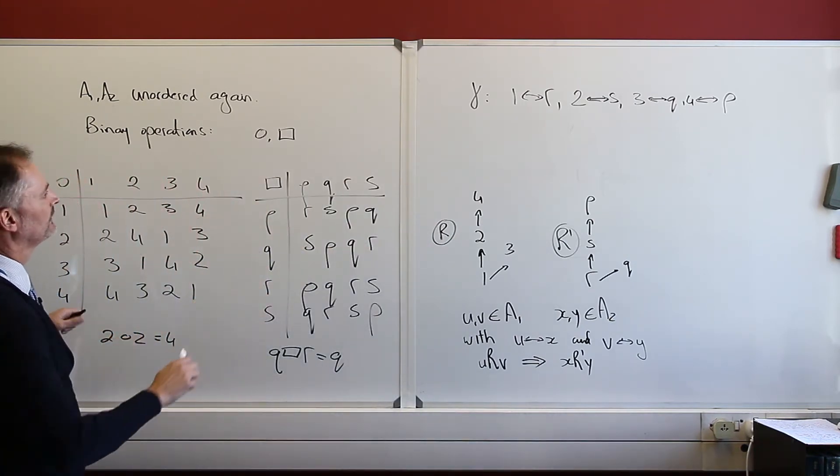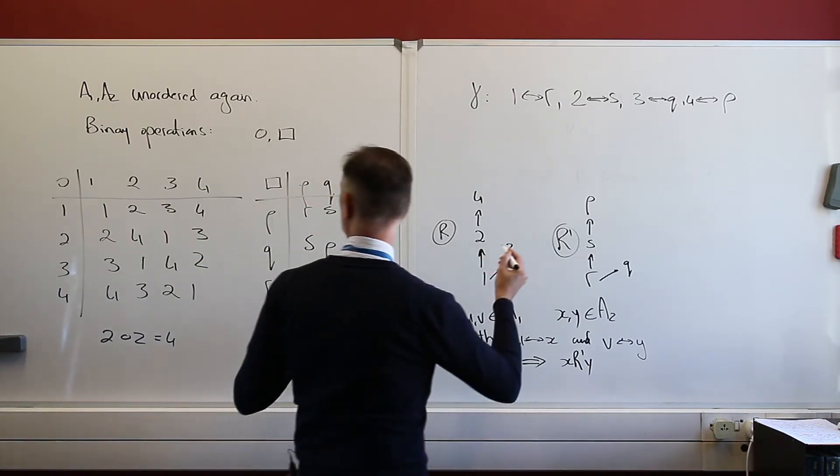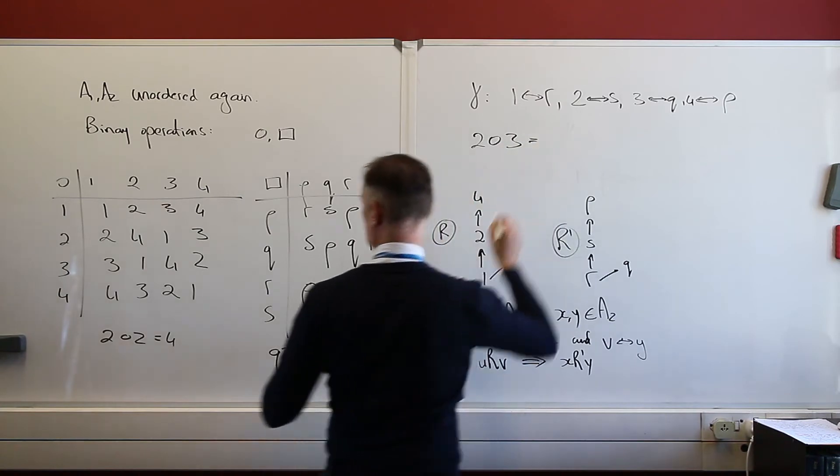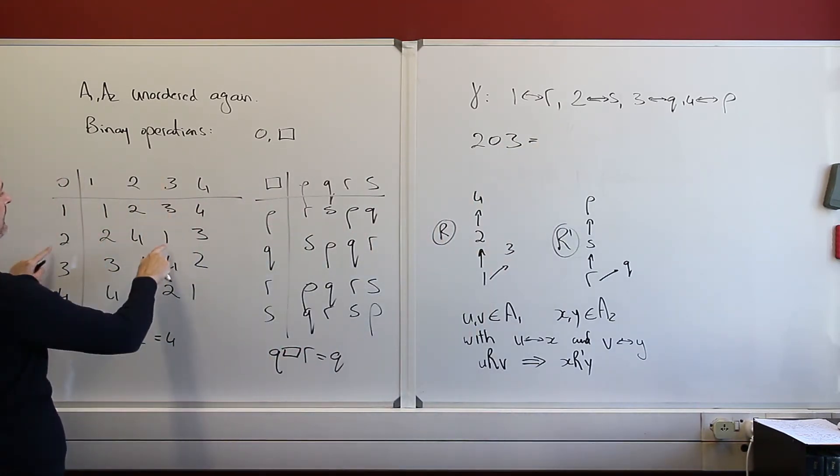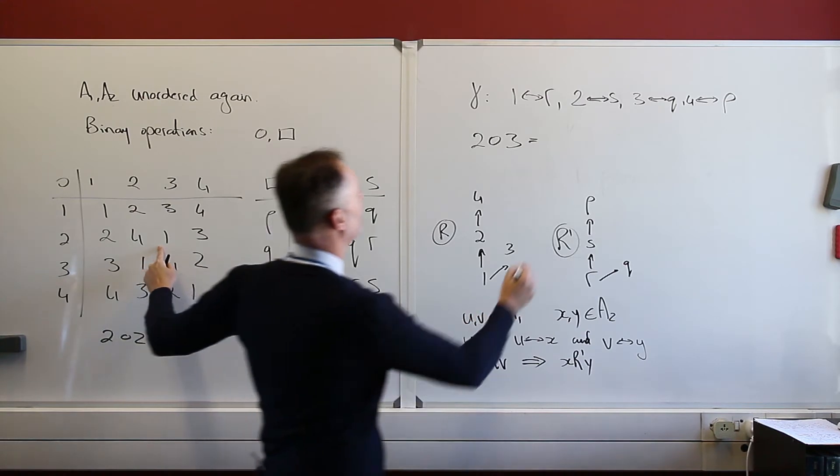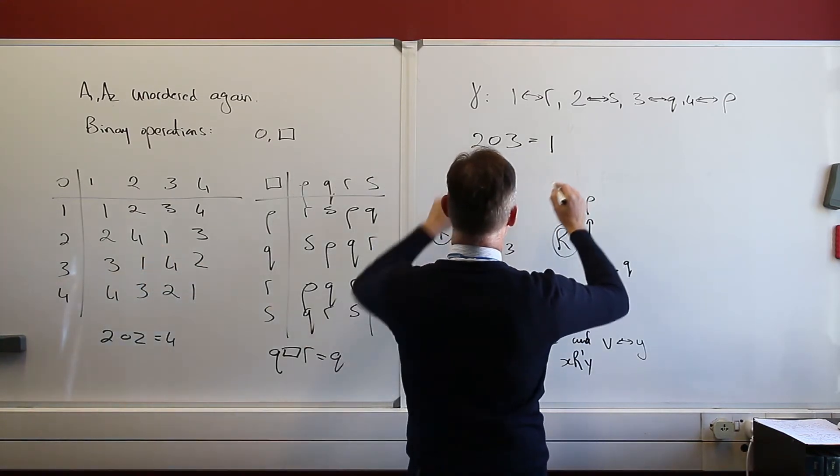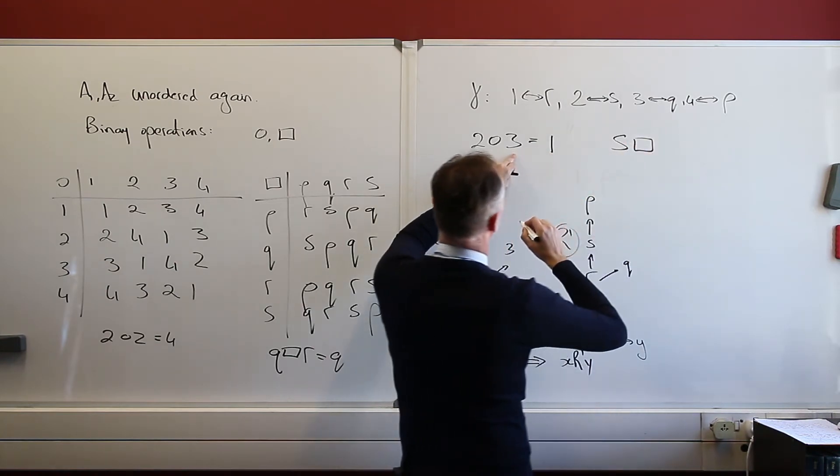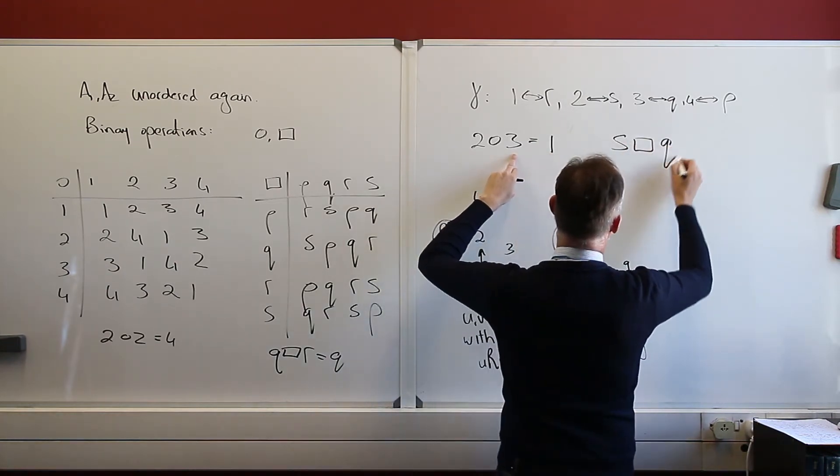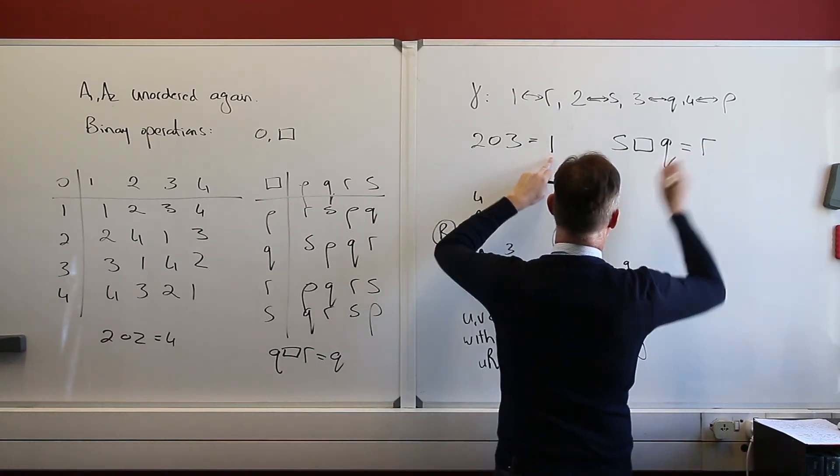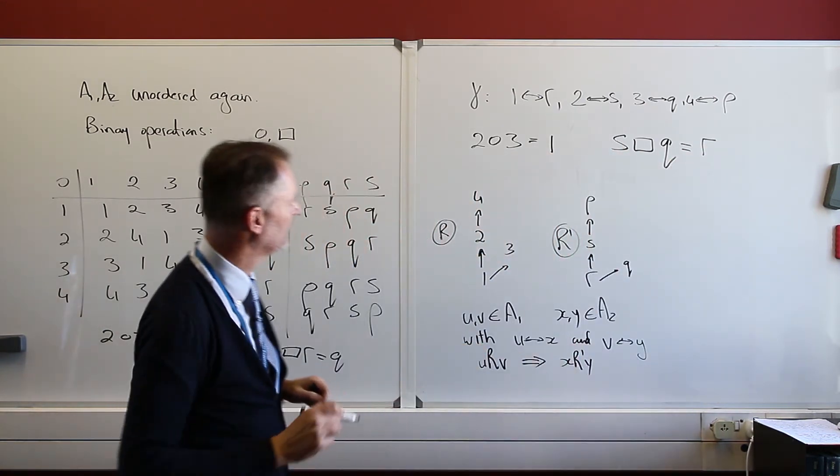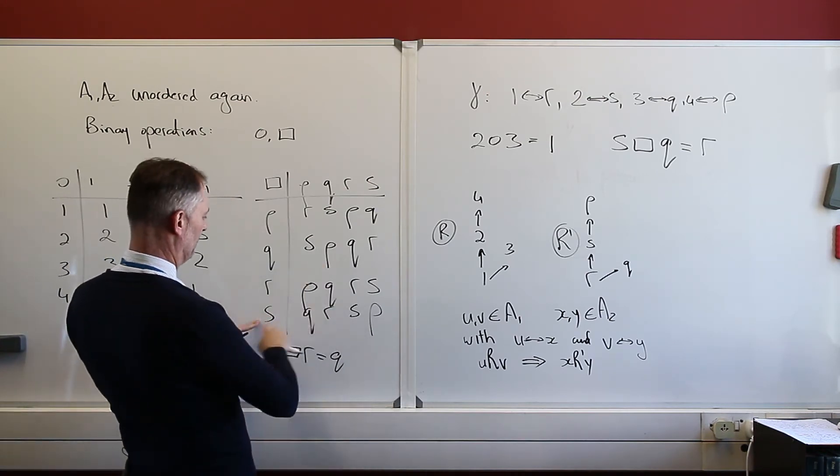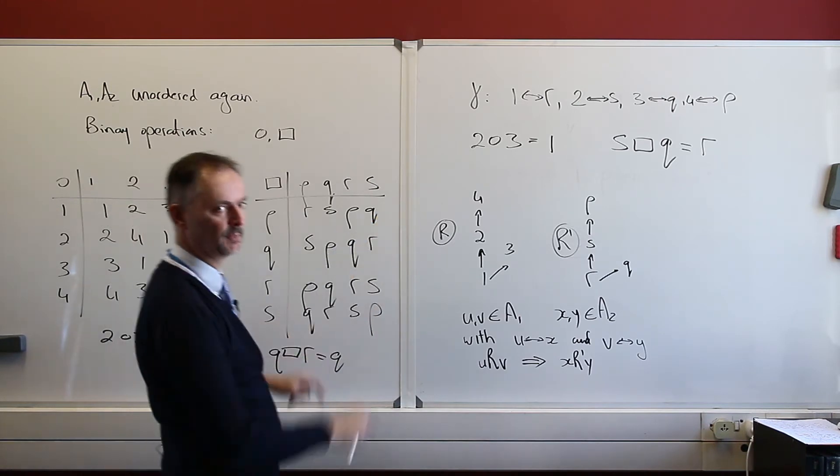So let's say, for instance, we take on this side, we take 2 and 3. So 2 and 3. What is that going to give us? Well, 2 and 3, that binary operation gives me a 1. And let's look if we map this. 2 maps to s, and 3 maps to q, and that better give us r. And that better give us r. So I've got s on this side, q on that side, and that binary operation gives me r.